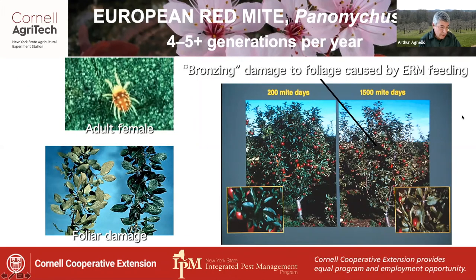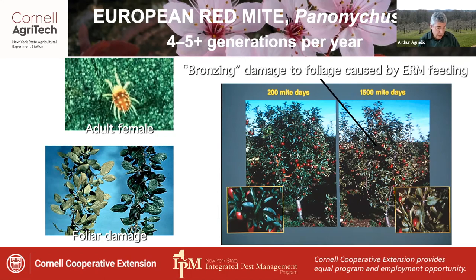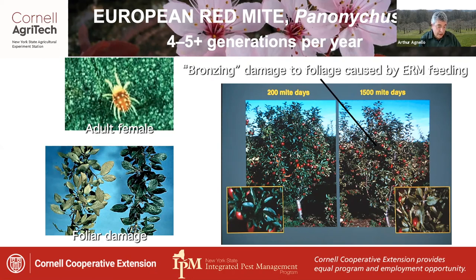European red mite is a very cosmopolitan apple pest that occurs nearly everywhere in the world that apples are grown. They overwinter as bright red eggs on the bark around the base of the buds and fruit spurs. The eggs hatch toward the end of April in New York and go through several generations per year — at least four or five, and as many as seven or eight, depending on the season. Both adults and immatures feed on the foliage by rasping away at the mesophyll tissue, which creates a bronzing effect visible in photos. This damage impacts the tree's health and, by extension, fruit quality. Severe infestations can even cause defoliation.